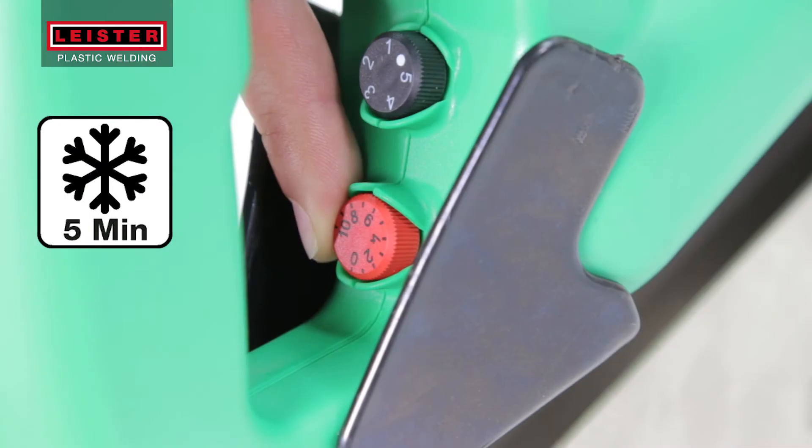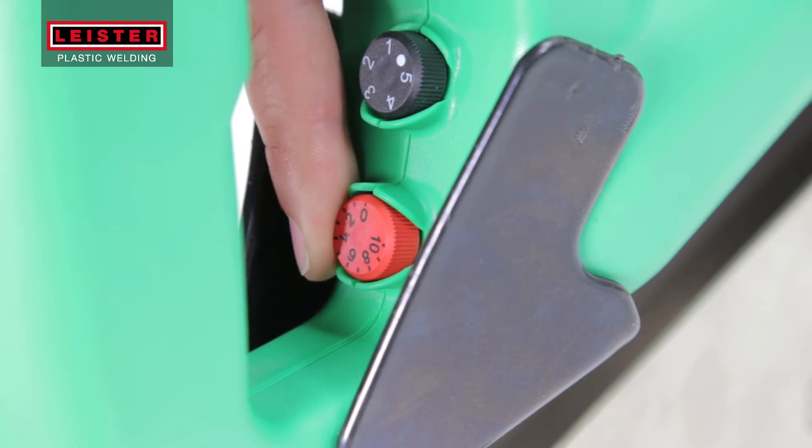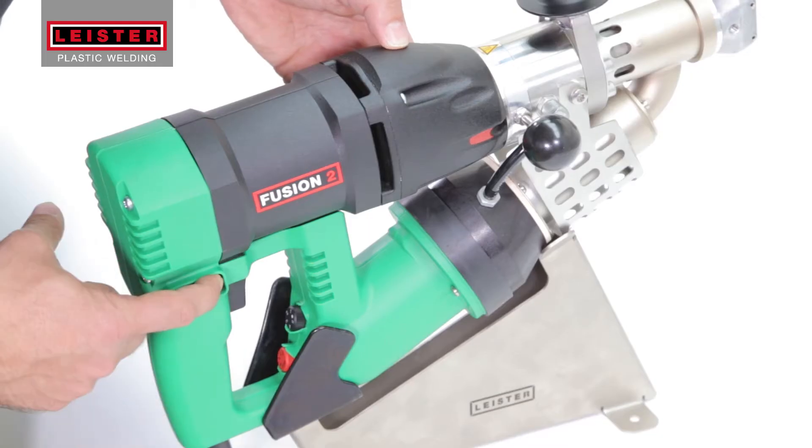Now, before switching the tool off, turn the red temperature potentiometer to the zero position and let the blower run for at least 5 minutes to allow the welder to cool down.